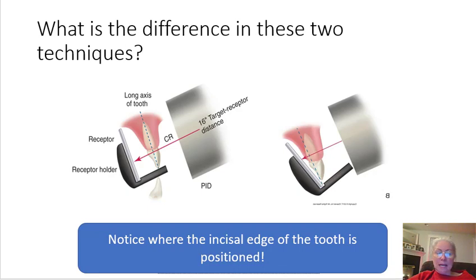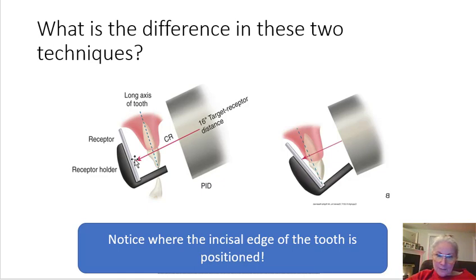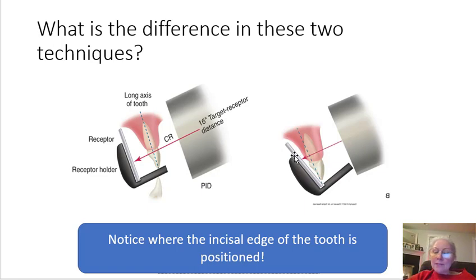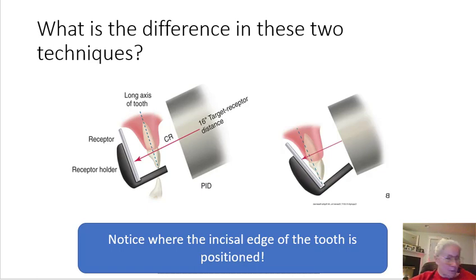To compare the two techniques: in paralleling, the receptor, long axis, and PID face are all parallel, with the central ray hitting the receptor perpendicularly. Some energy is absorbed by the tooth via the photoelectric effect, creating radiopaque images. In bisecting, if there were a large torus present, you'd hug the receptor closer to the tooth and aim the cone at the bisector angle. Enjoy your weekend — I hope you're doing something fun — and I will see you soon!